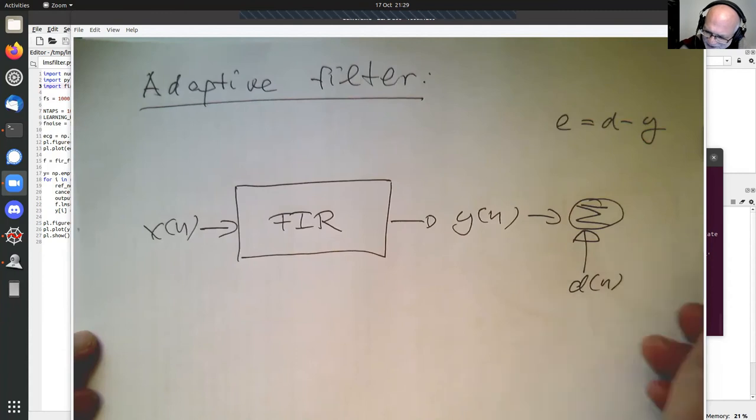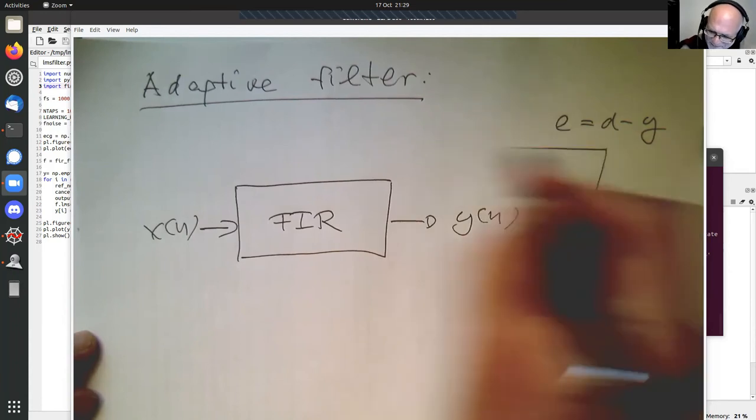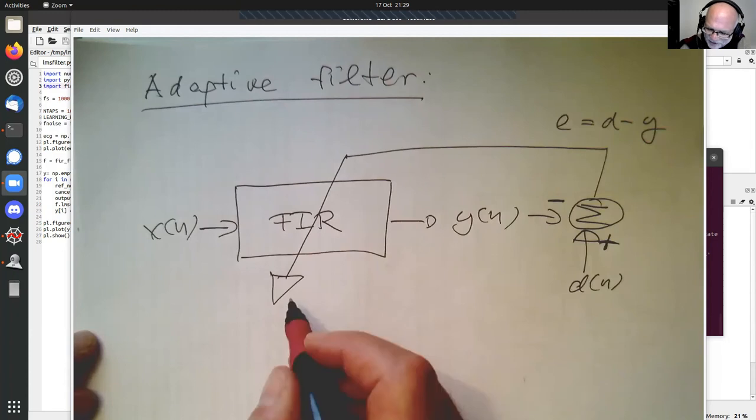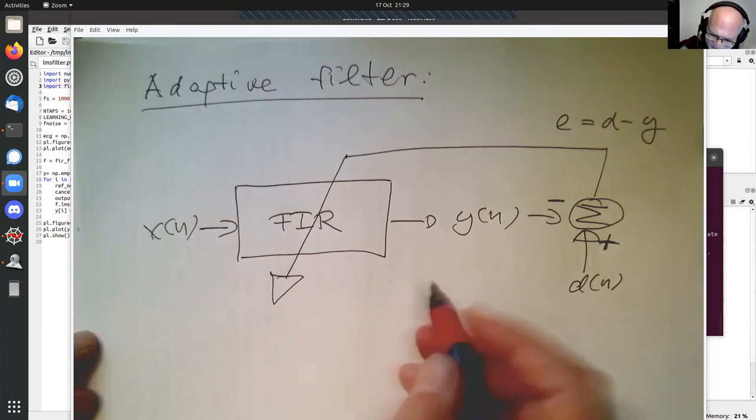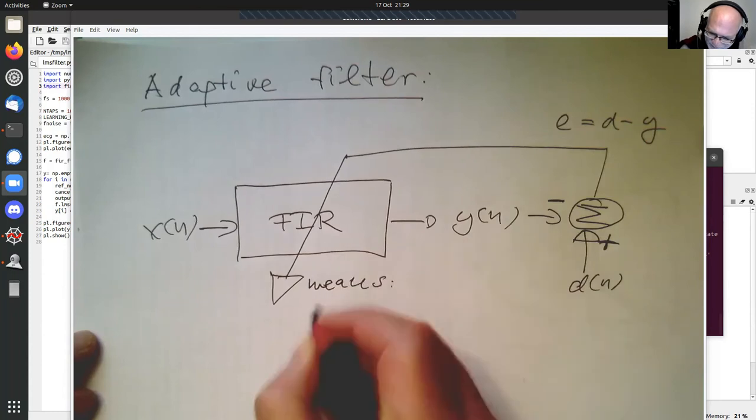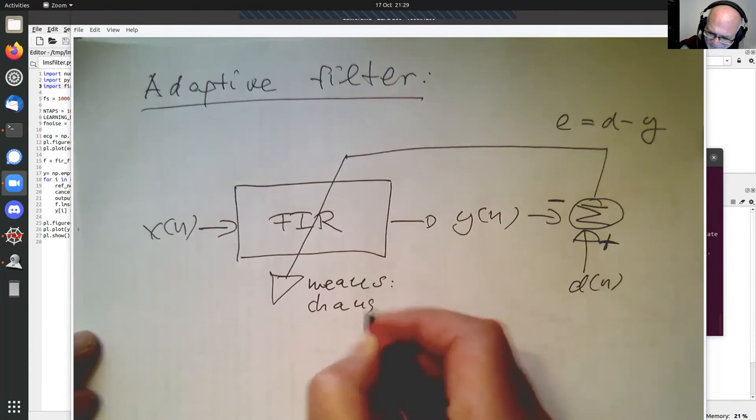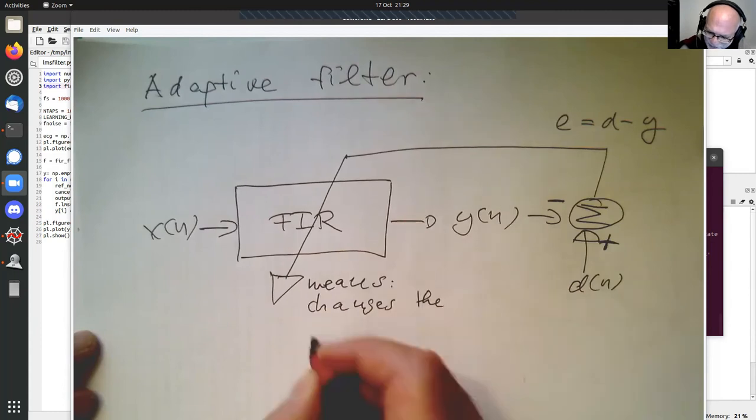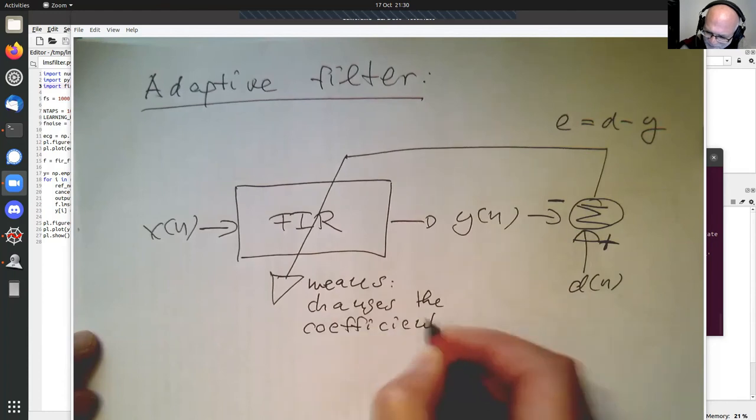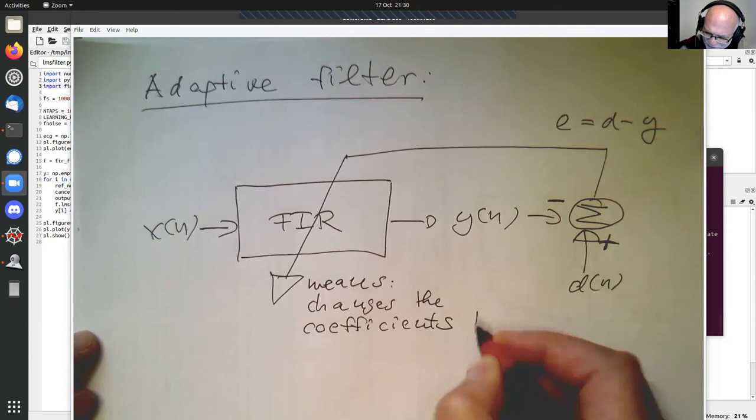And this is our Y of N. This is negative, and this is positive. And then this is changing the coefficients here of the filter. So this changes the coefficients, coefficient H.